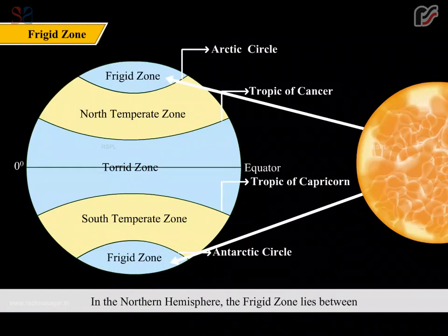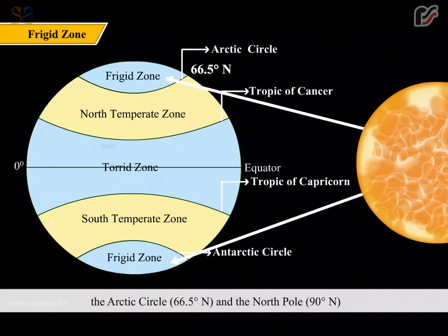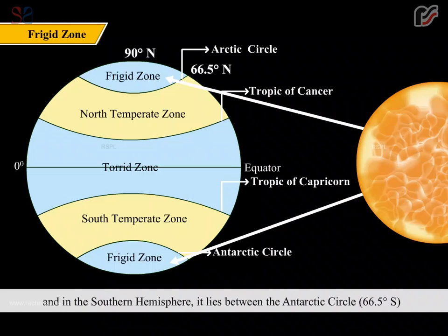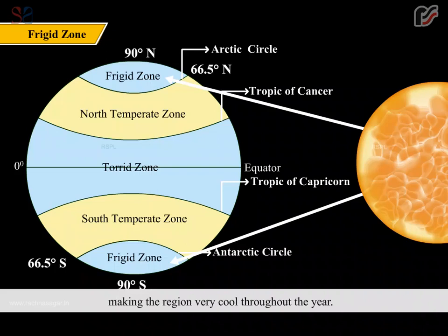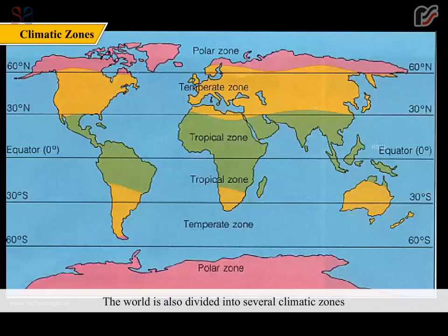In the northern hemisphere, the frigid zone lies between the Arctic Circle (66.5 degrees north) and the North Pole (90 degrees north). In the southern hemisphere, it lies between the Antarctic Circle (66.5 degrees south) and the South Pole (90 degrees south). The slant of the sun rays almost loses its strength, making the region very cool throughout the year. The summers are short and cool and the winters are long and very cold. The world is also divided into several climatic zones based on temperature and rainfall.